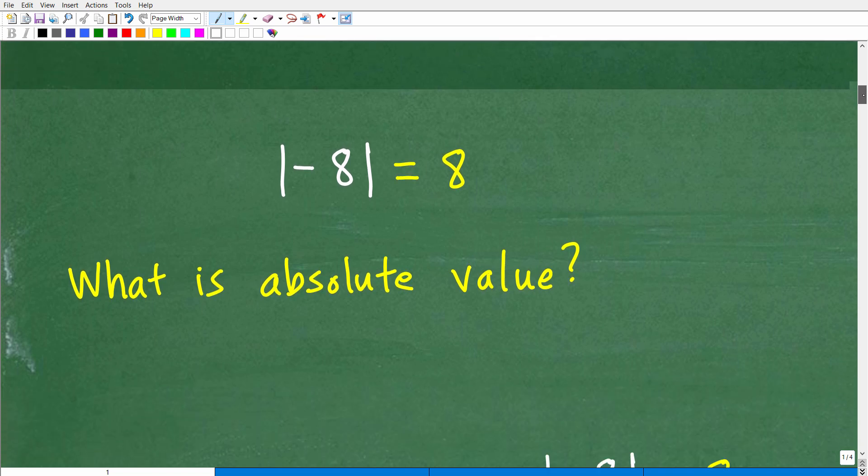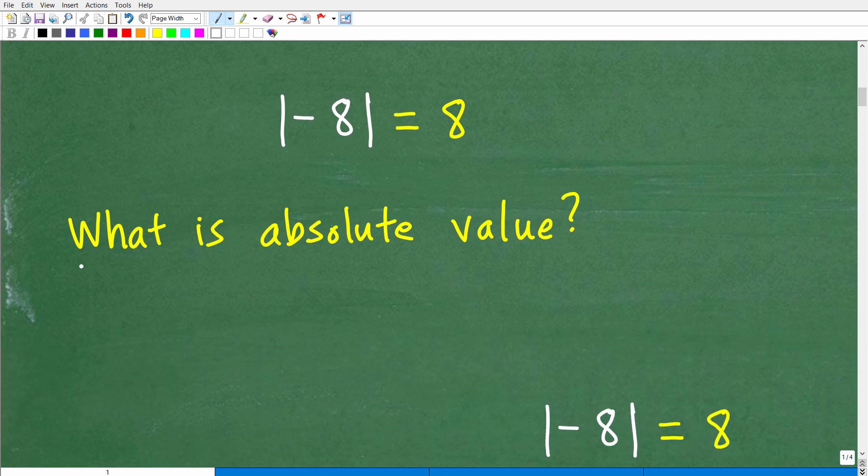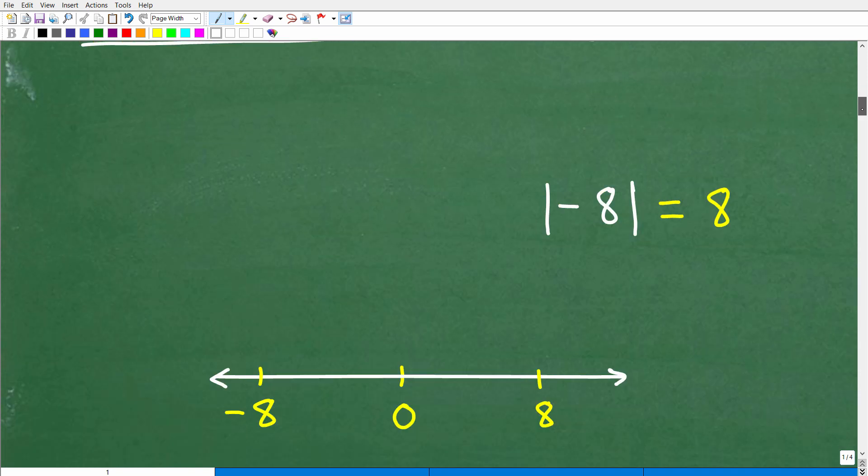So what is absolute value? That is the question. Of course, we know that the absolute value of negative 8 is 8. But what is absolute value? Well, let's go and take a look at that right now.